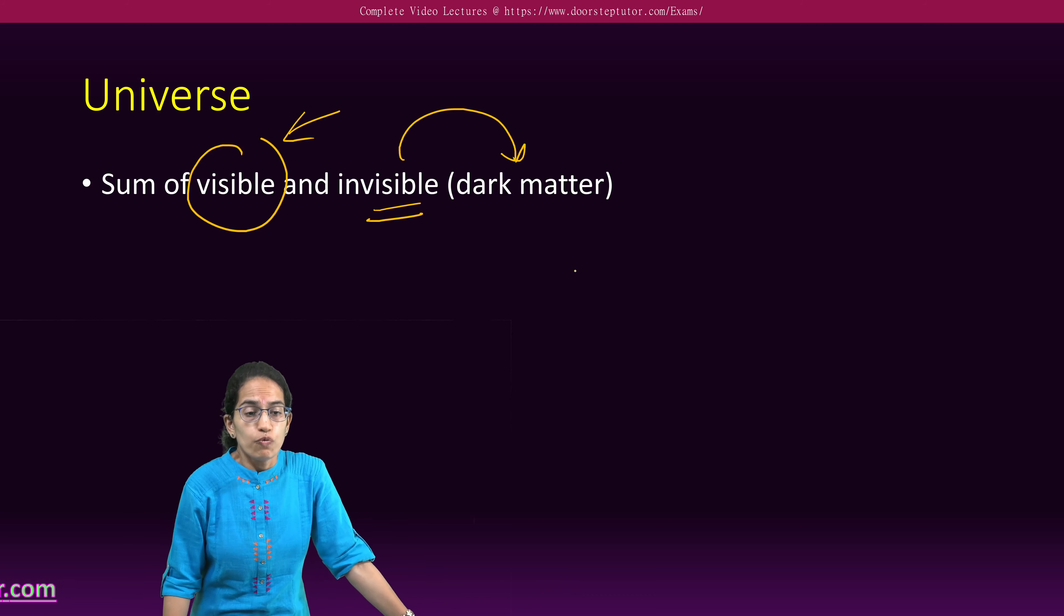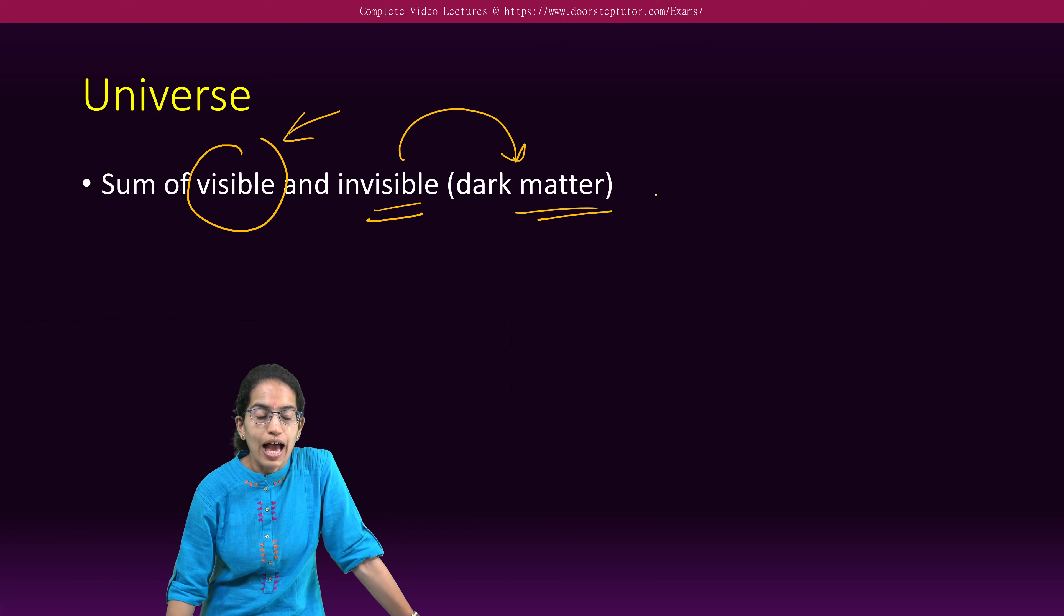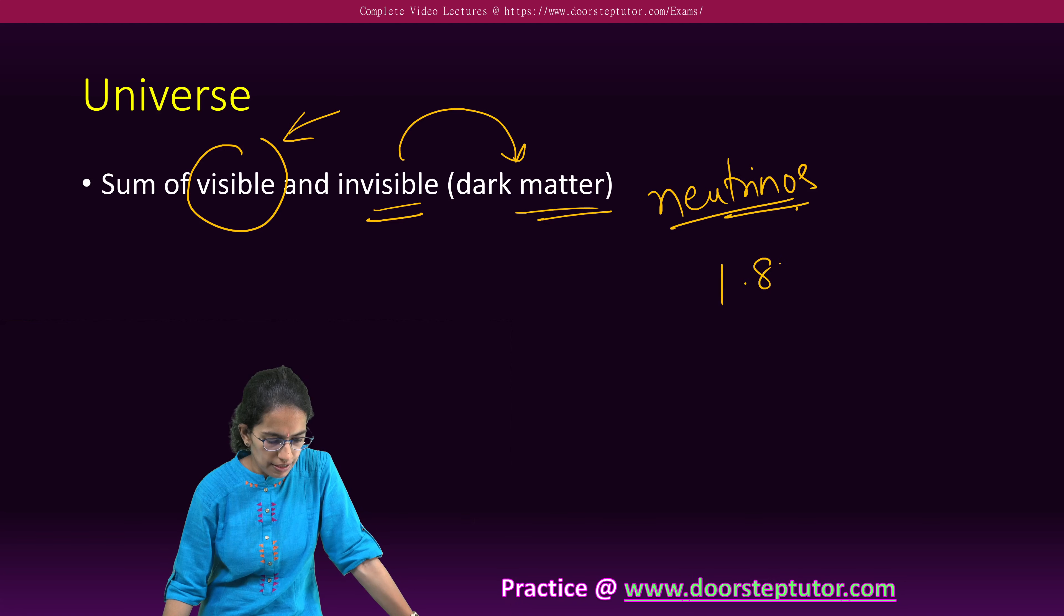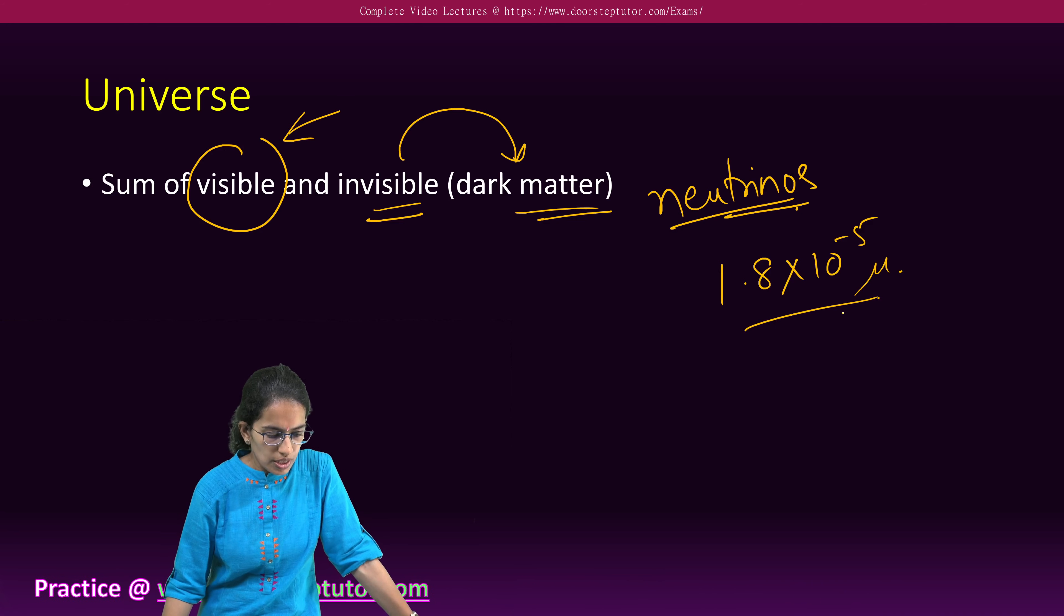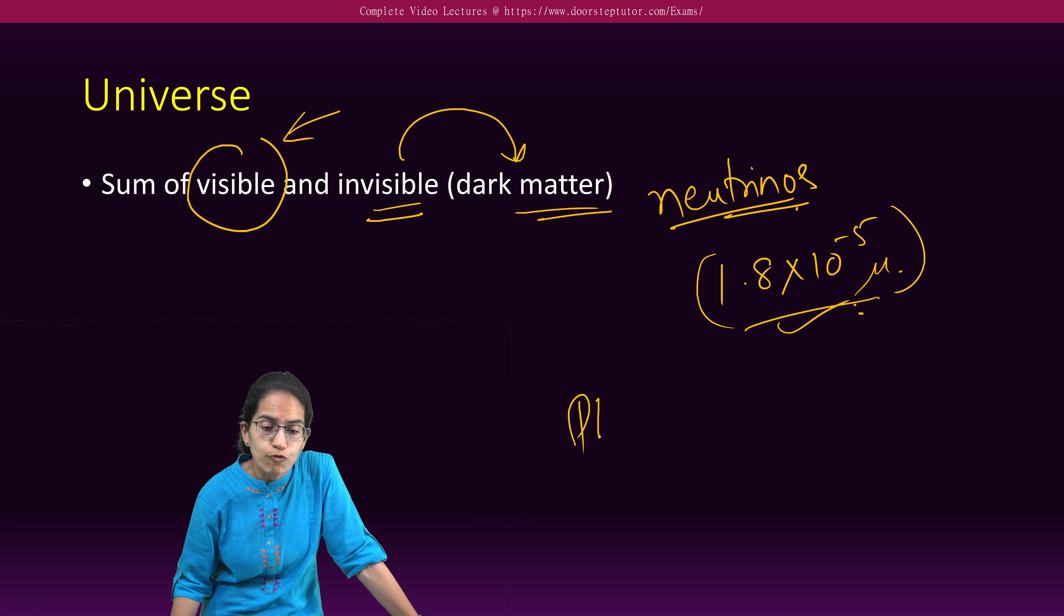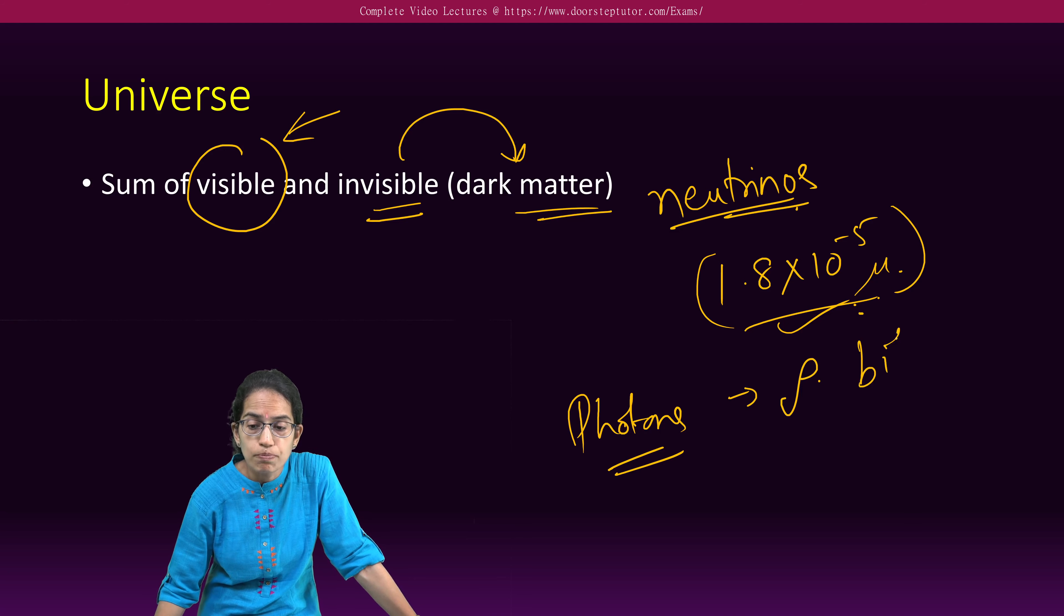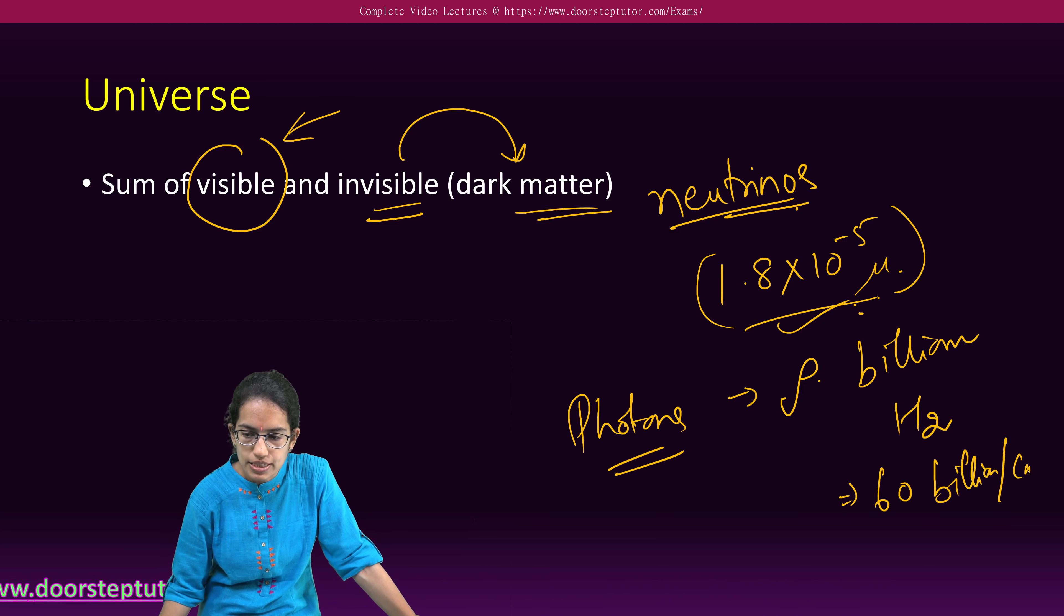But to begin with, whenever we talk about universe we understand that this dark matter, which is the invisible part, has neutrinos and these neutrinos have a mass of nearly 1.8 into 10 raised to power minus 5 microns, and that is unknown particles which interact with each other.